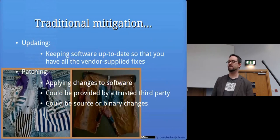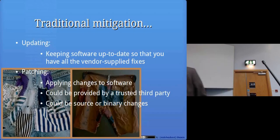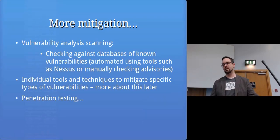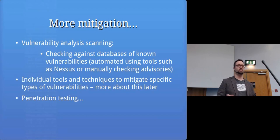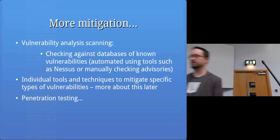The traditional mitigation is to update your software — if the vendor fixes the problem or you can patch the software by applying small changes, either from a third party or usually from the vendor. Another approach is vulnerability analysis scanning, where you scan your system for known problems. You can also do penetration testing and ethical hacking to find problems, and there are various tools to discover new unknown problems or defend against these kinds of attacks — we'll discuss those later in the semester.